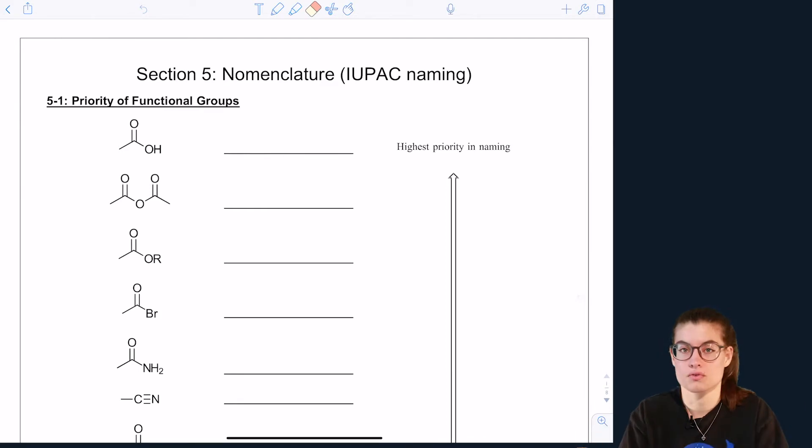So before we go through this, in the first couple of videos we talked about how alkenes and alkynes had higher priority than alkanes, and of course alkanes have the same priority as halides.